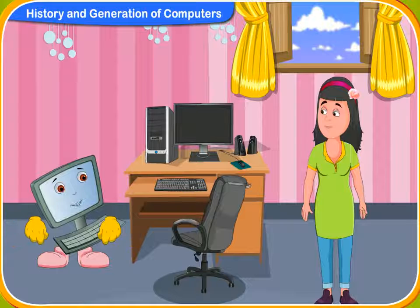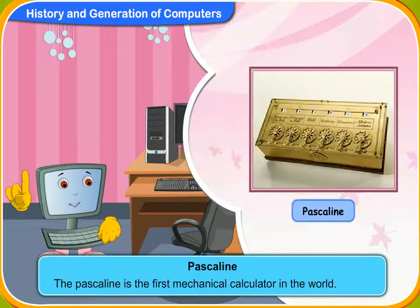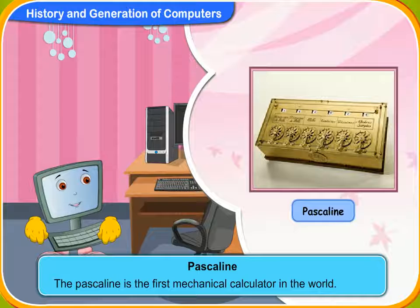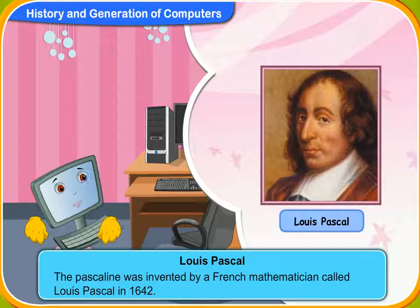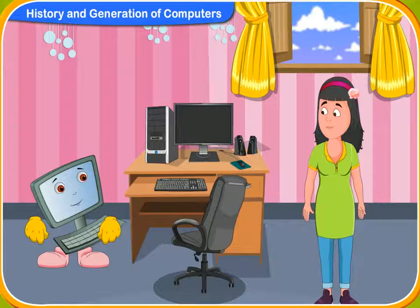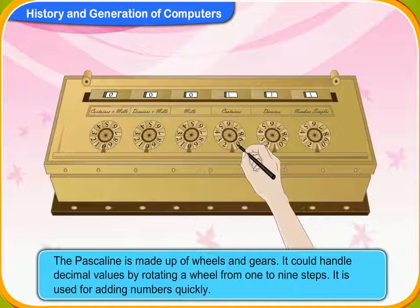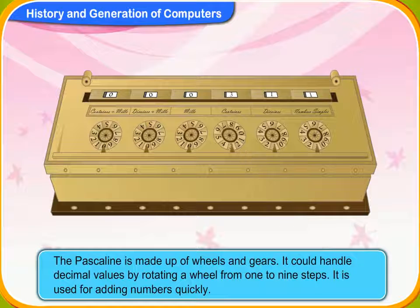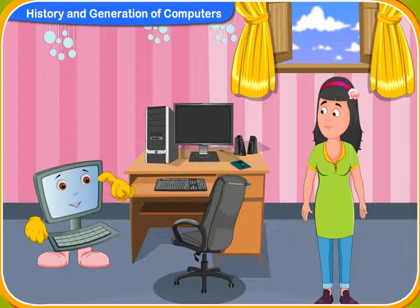Let us now discuss about the pascaline. The pascaline? What is it, Clicko? The pascaline is the first mechanical calculator in the world. Why is it called pascaline? The pascaline was invented by a French mathematician called Blaise Pascal in 1642, and so it is named after him. How does it work? The device is made up of wheels and gears. It could handle decimal values by rotating a wheel from one to nine steps. It is used for adding numbers quickly. The meters used in taxis nowadays are an example of the pascaline.